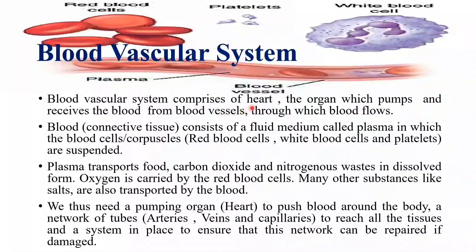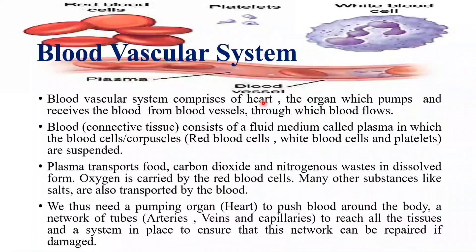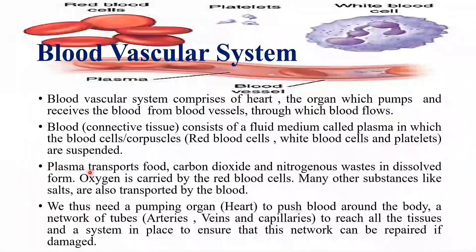The pumping organ is the human heart, which is responsible for pushing blood to different parts of the body. This blood is transported via blood vessels — there are three types: arteries, veins, and capillaries. Plasma is the fluid present in the blood. It is responsible for transporting digested food, carbon dioxide, and nitrogenous waste material, as all these substances are dissolved in plasma.